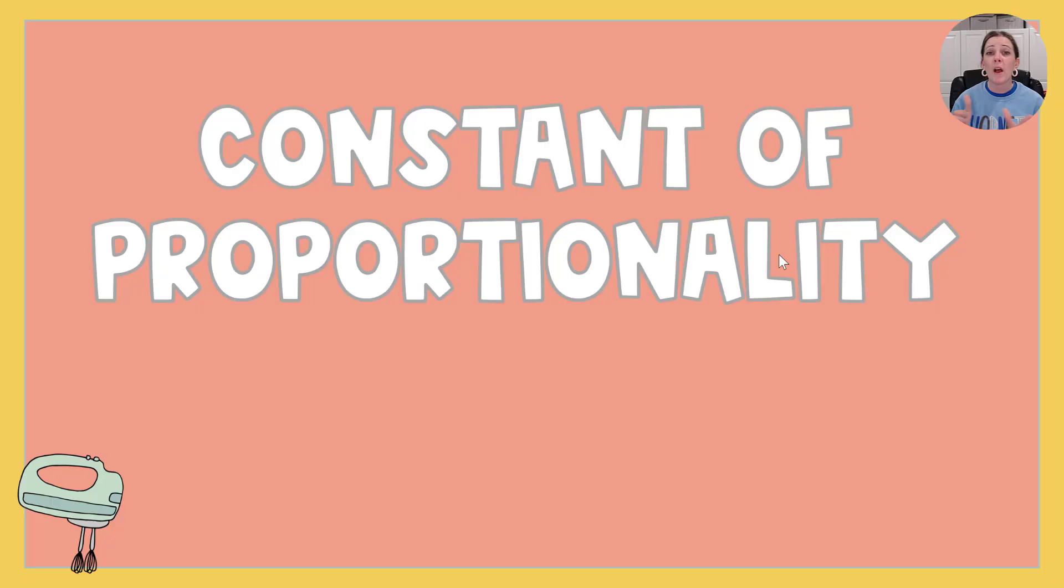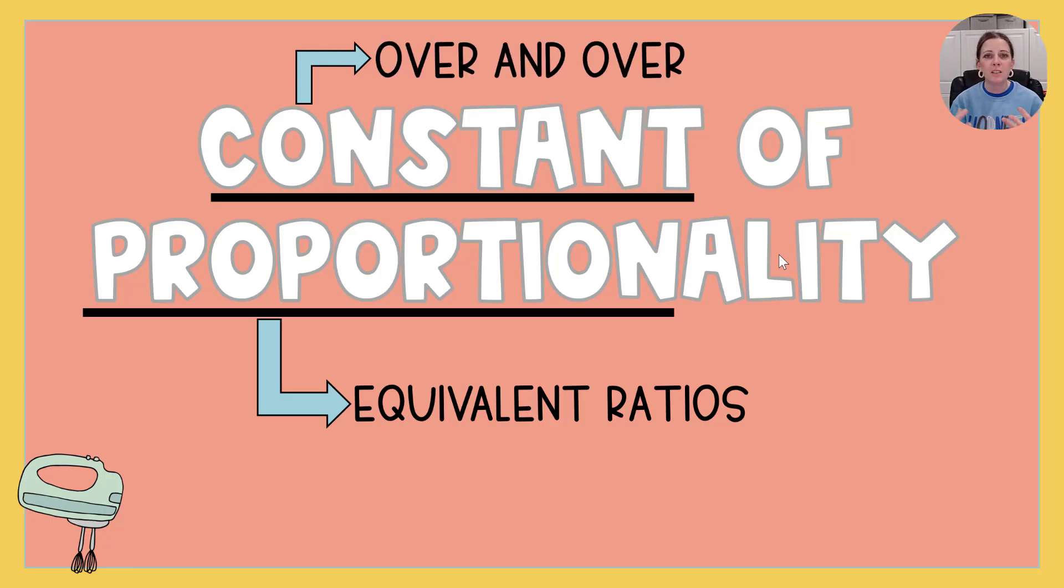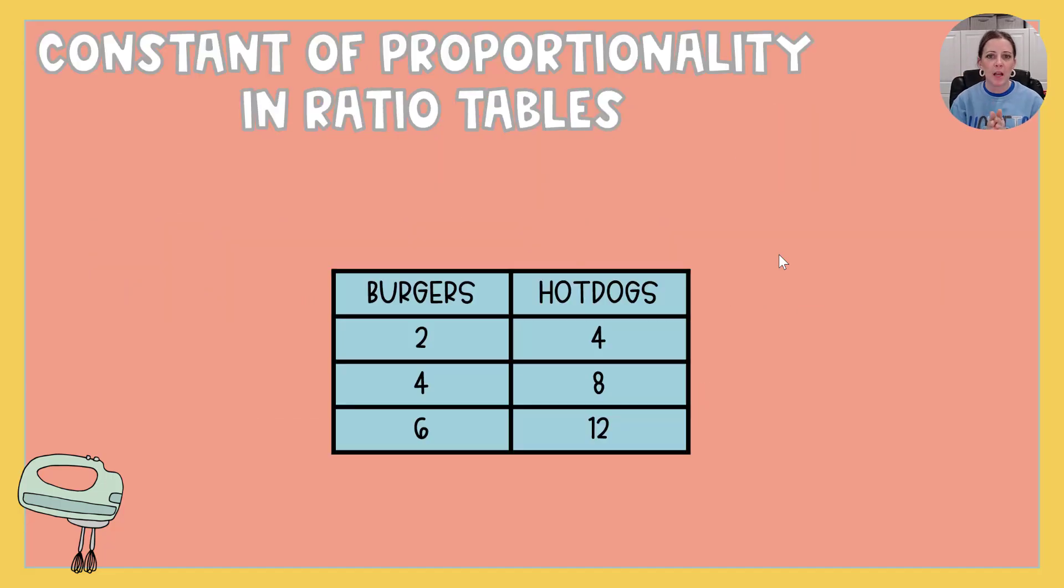So constant of proportionality, what in the world is it? Well let's look at these two words separately and see what we know about them. In proportionality I see the word proportion. We know that a proportion is just equivalent ratios. Okay what does the word constant mean? You've got it. A constant is something that happens over and over and over. It's consistent. It's constant. And so a constant of proportionality is that thing that happens over and over and over with equivalent ratios. Let me show you what I'm talking about.